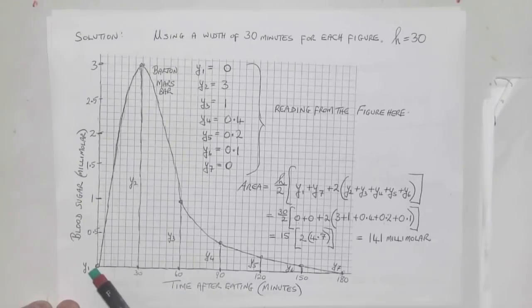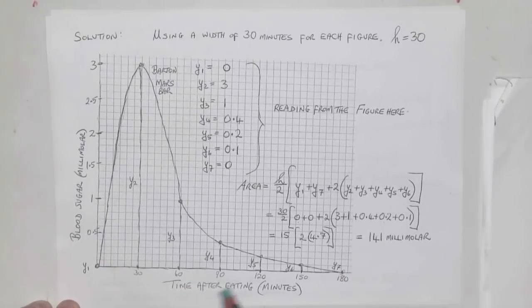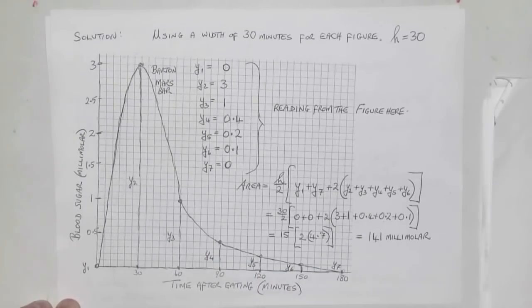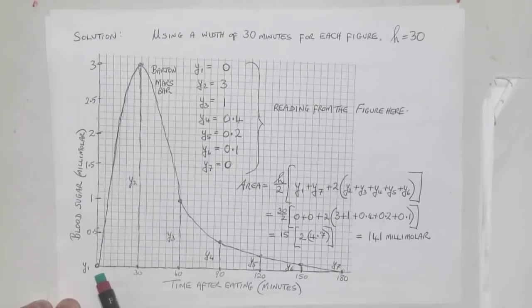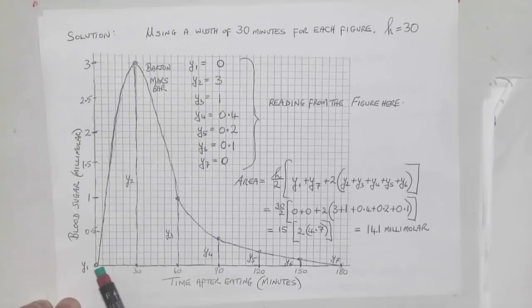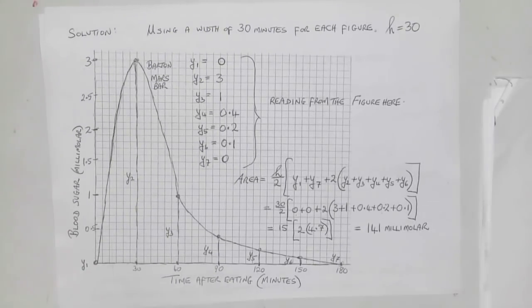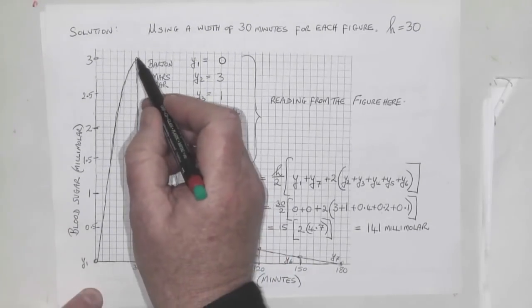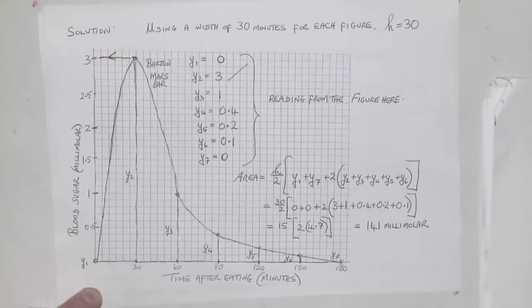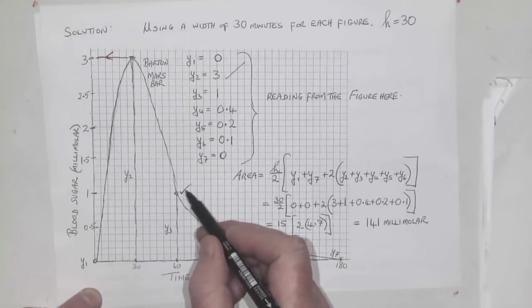I'm using a width of 30 minutes for each figure. The numbers are 0, 30, 60, 90, 120, 150, 180—one, two, three, four, five, six sections of trapeziums. There's y1 at height zero, y2, y3, y4, y5, y6, and y7 at zero. To get the others, I read them off. At 30 minutes up to there, that's 3, so y2 is 3. Y3, up and across, is 1. Y4 is 0.4. Y5 is 0.2, y6 is 0.1.